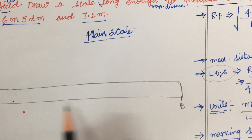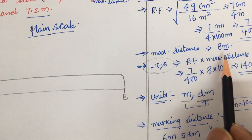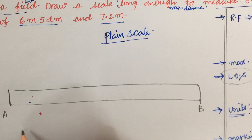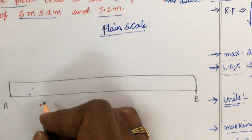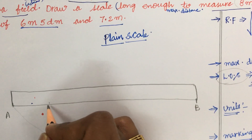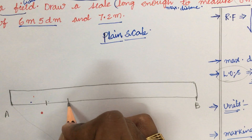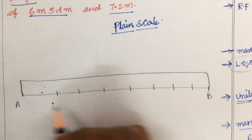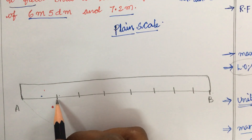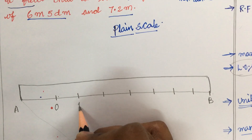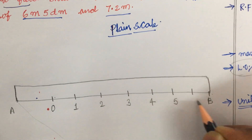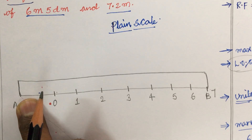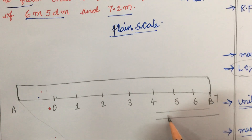We represent 8 meters on the 14-centimeter line. Divide the rectangle into 8 equal parts: 1, 2, 3, 4, 5, 6, 7, and 8. The first box on the left is reserved for the second unit, so label from 0 to the right: 0, 1, 2, 3, 4, 5, 6, 7. From 0 to the right end is 8 meters — this is the meter scale.